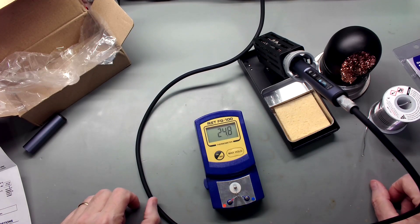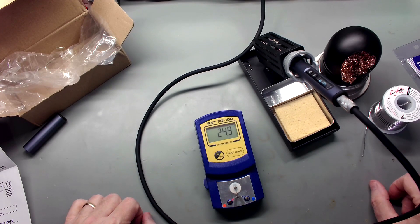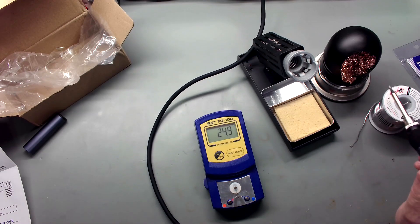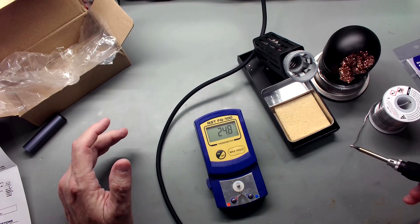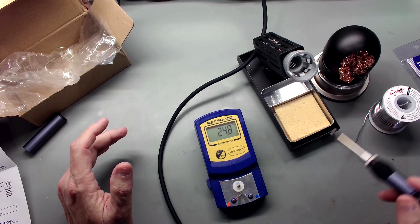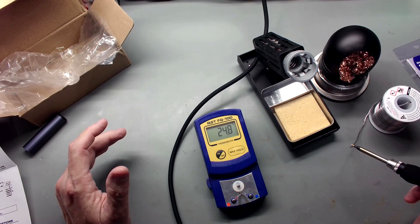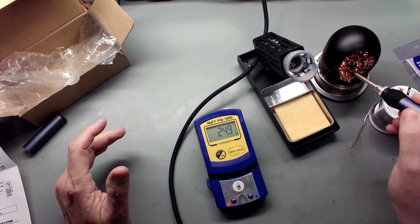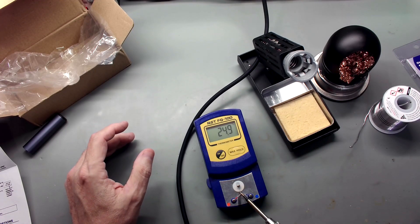Now, it says make sure it reads about room temperature. 24.8C is about room temperature. I assume I got the C version, which is good. So, we're going to do just as it said. We're going to clean this tip, wet it with a little solder. Oh, I'll let it go to sleep, I'm sorry, give it a minute. Wet it with a little solder. I don't think they meant that much, but let's touch it down here and see what we get.